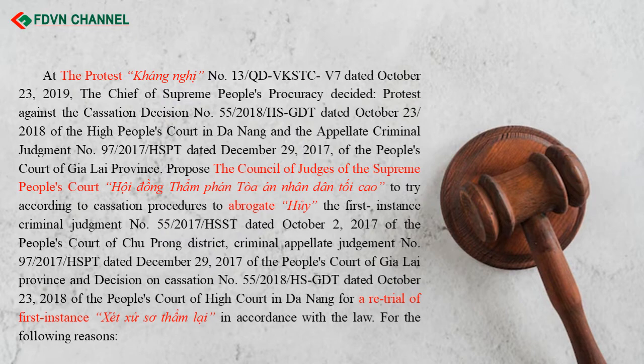At Protest No. 13-QDVKSTC-V7 dated October 23, 2019, the Chief of the Supreme People's Procuracy protested against Cassation Decision No. 55-2018-HSGDT of the High People's Court in Da Nang and the Appellate Criminal Judgment No. 97-2017-HSBT of the People's Court of Gialai Province. The proposal was for the Council of Judges of the Supreme People's Court to abrogate the first instance judgment, the appellate judgment, and the cassation decision for retrial in accordance with the law.